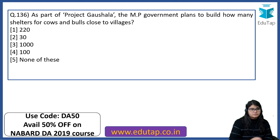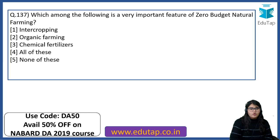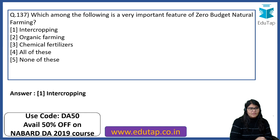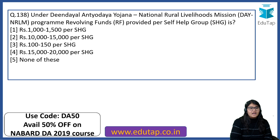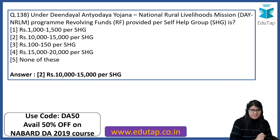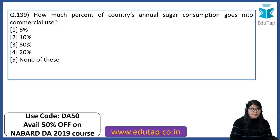As part of Project Gaushala, the MP government plans to build 1000 shelters for cows and bulls close to villages. Which is a very important feature of zero budget natural farming? This is frequently in the news — the answer is intercropping. Under the Deendayal Antyodaya Yojana National Rural Livelihoods Mission, the revolving fund provided per self-help group is Rs. 10,000 to 15,000. How much percentage of the country's annual sugar consumption goes into commercial use? The answer is 10%.